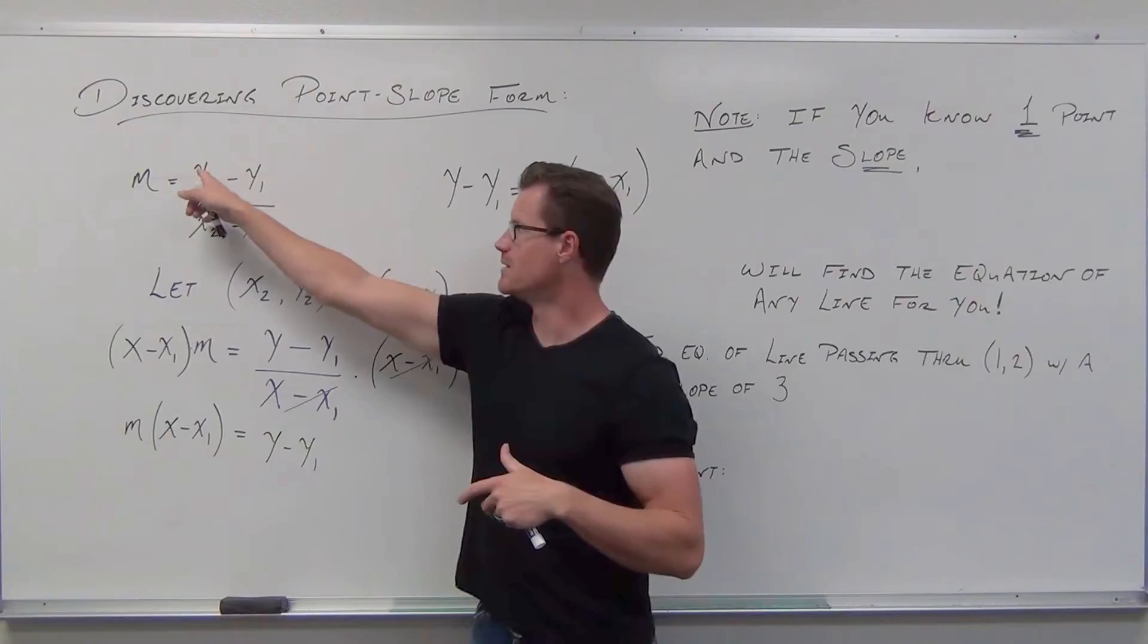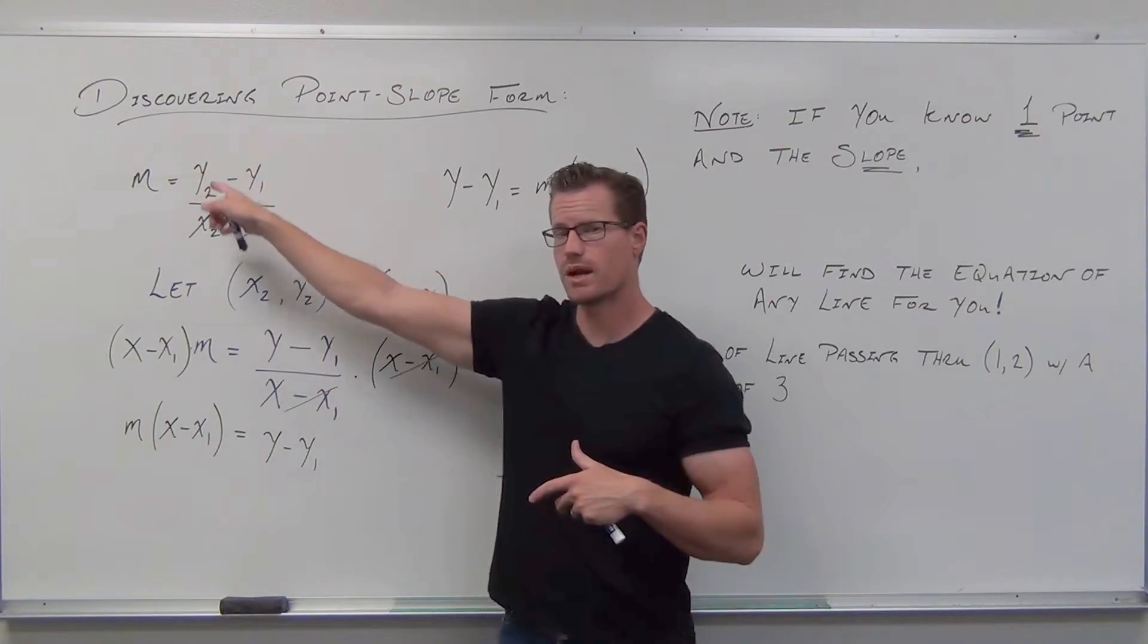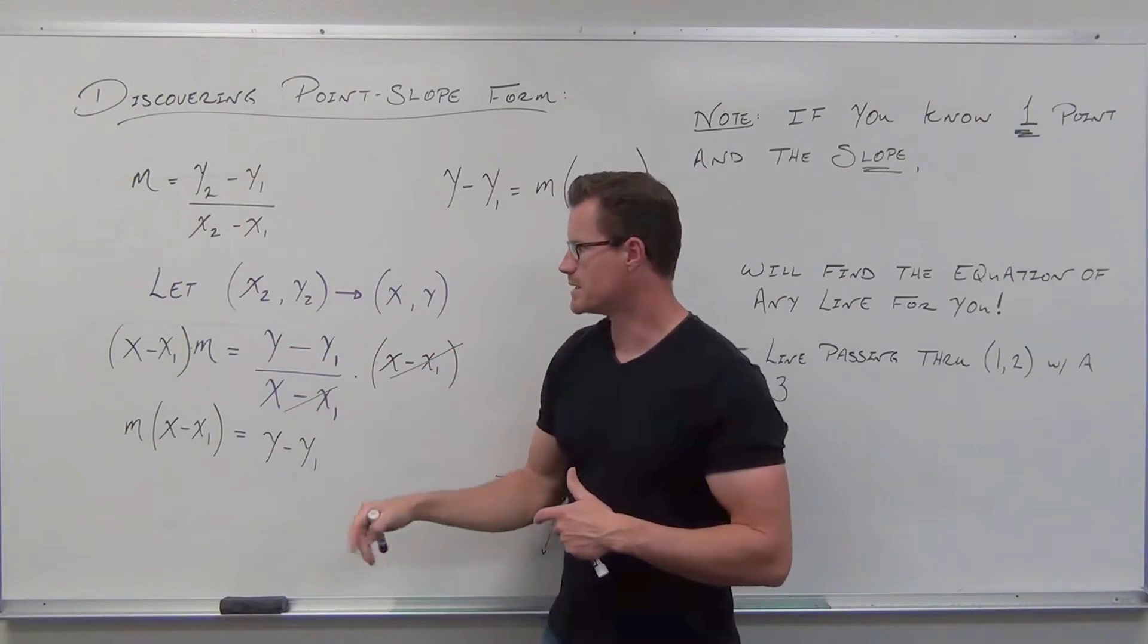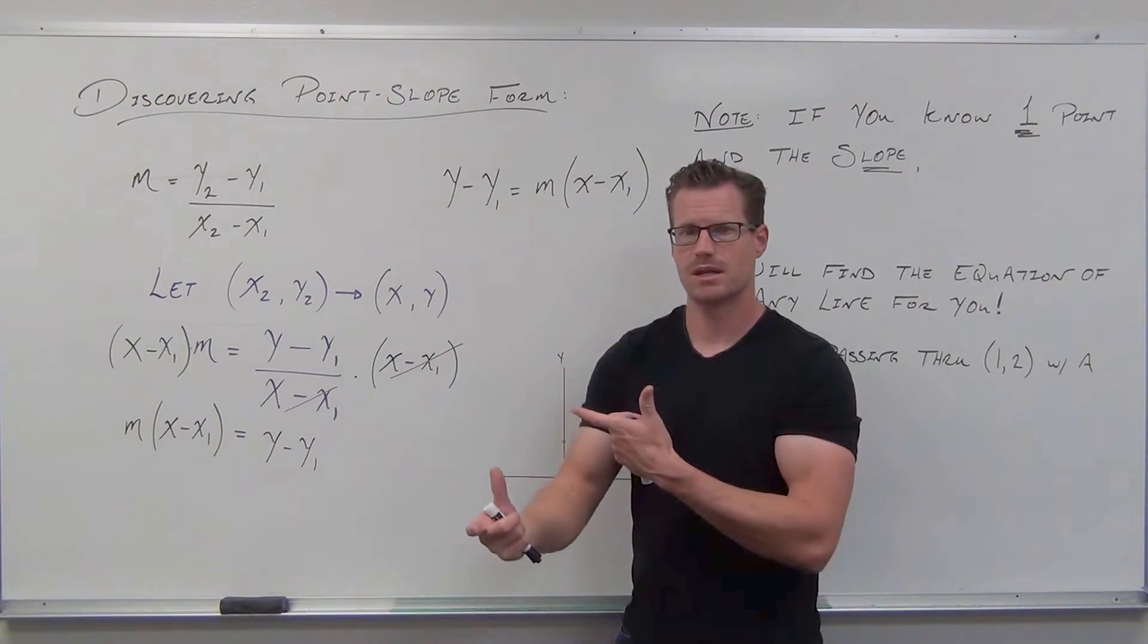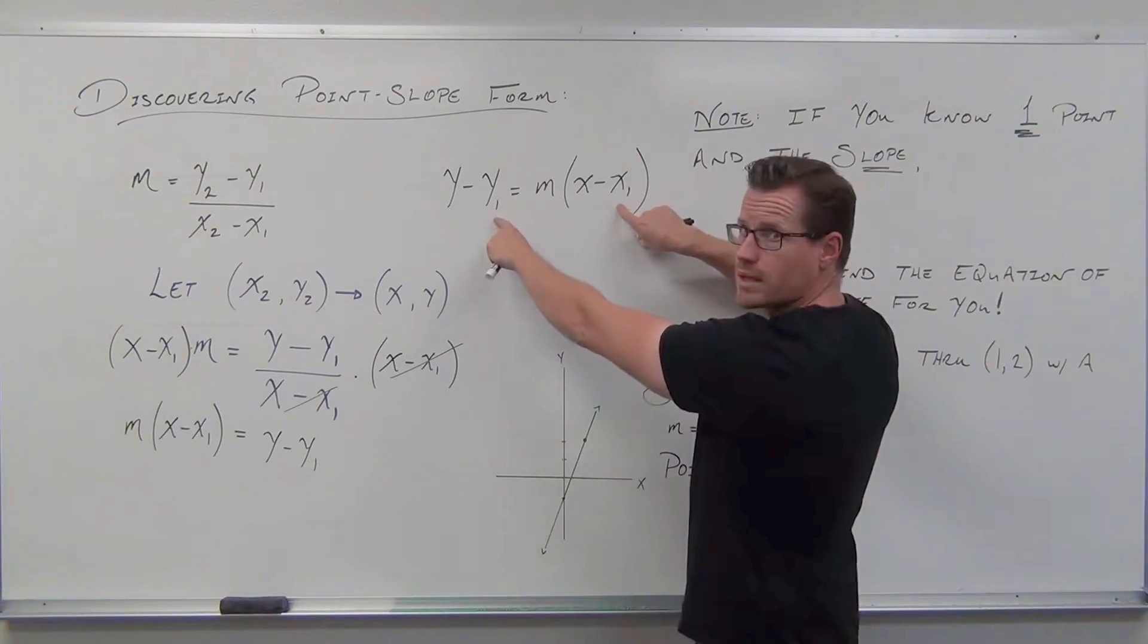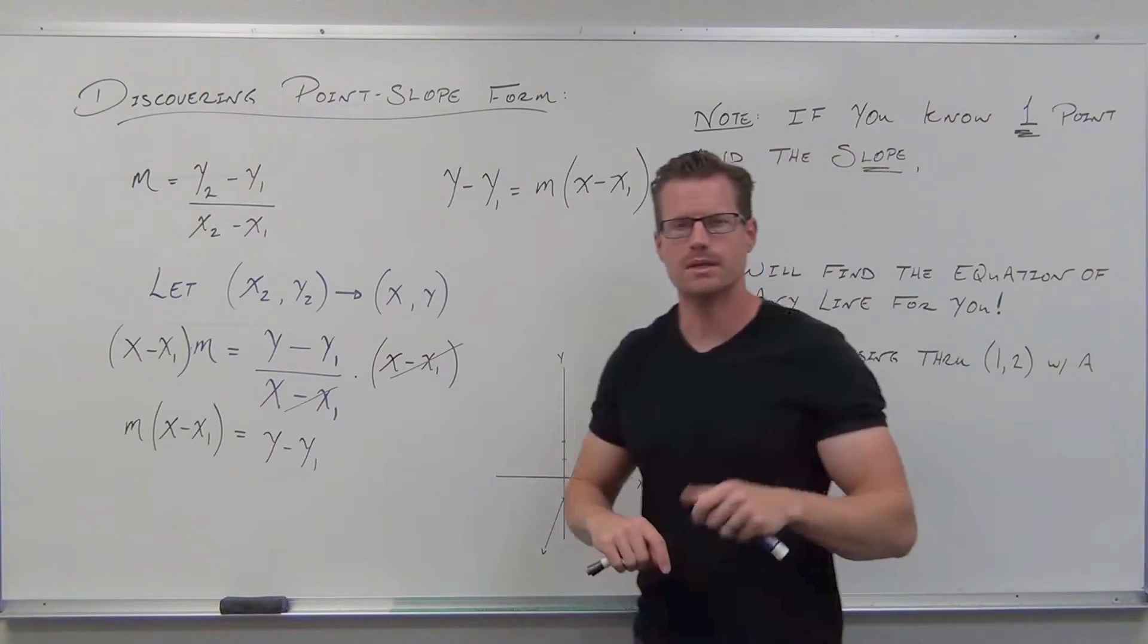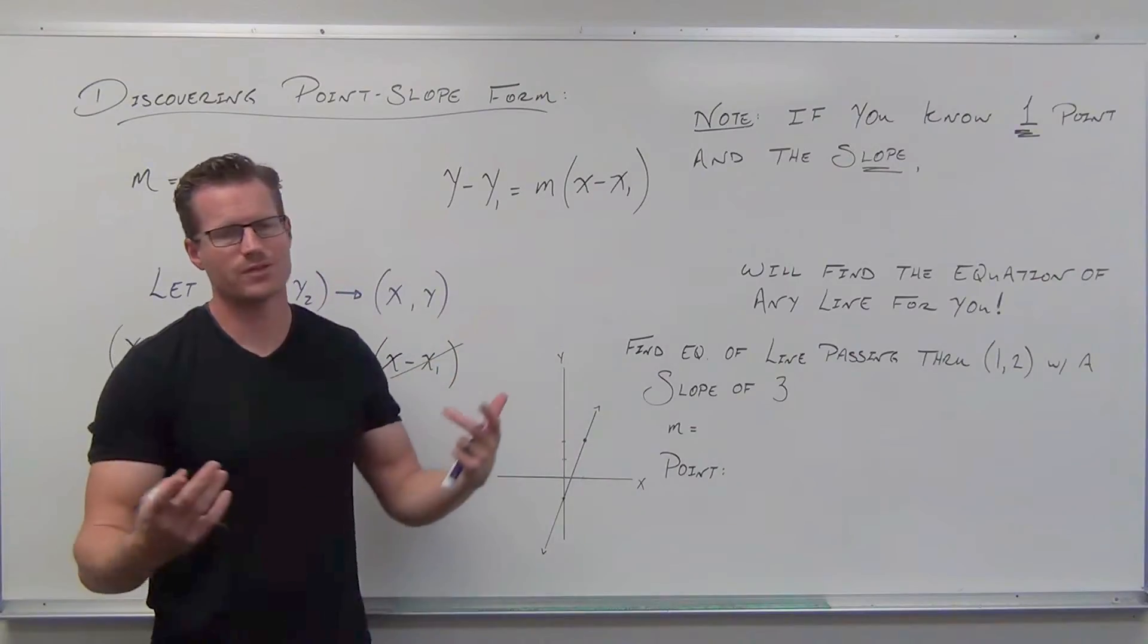If that's the case, then this becomes just y over x instead of y2 over x2. In order to solve fractions, multiply by the denominator, the m goes in front of our parentheses and we flip sides. That's where that comes from. That's one point. That's the slope. That is all you need to find the equation of the line.